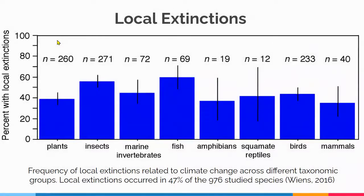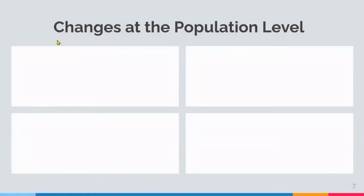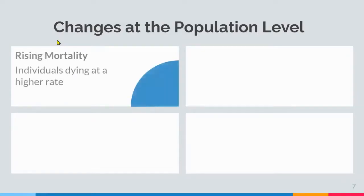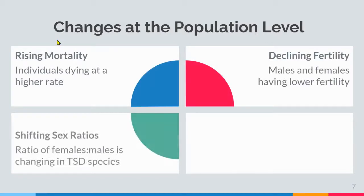Because climate change is occurring so quickly, many species are experiencing local extinctions. One study found that local extinctions occurred in 47 percent of the 976 studied species categorized here, and this number will continue to rise with increasing temperatures. Before populations experience local extinctions, they start to experience changes at the population level, including rising mortality, declining fertility, and shifting sex ratios.